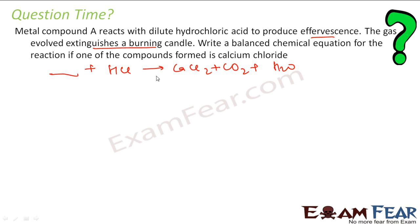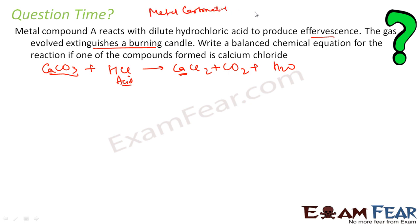Something is reacting with acid to give a compound. We have salt, carbon dioxide, and water as products — that is nothing but a metal carbonate reaction. Metal carbonate plus acid gives salt, carbon dioxide, and water. Since calcium chloride is one of the products, calcium is already there, so we can assume the compound is calcium carbonate.